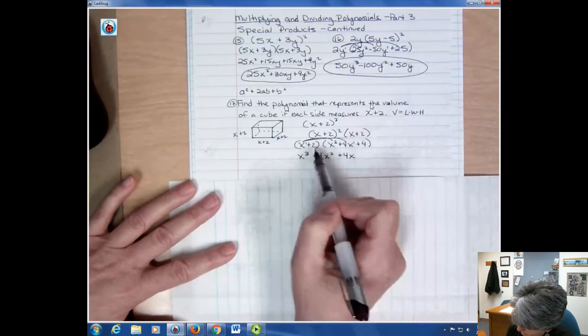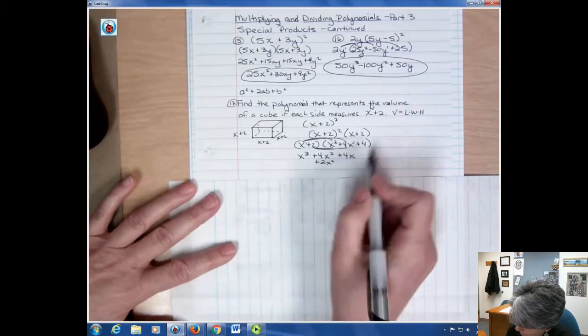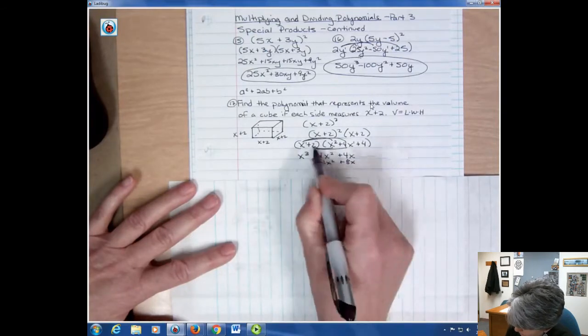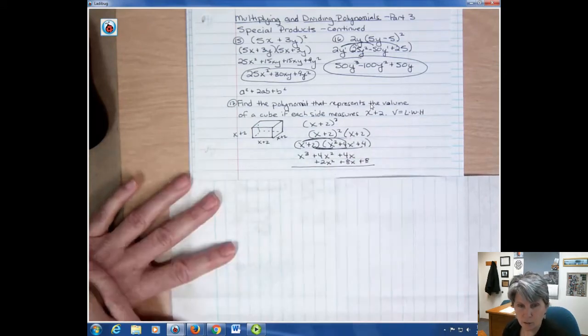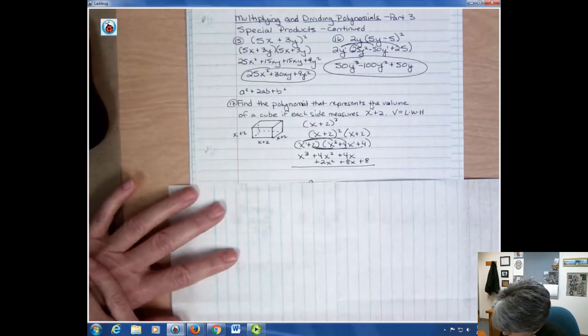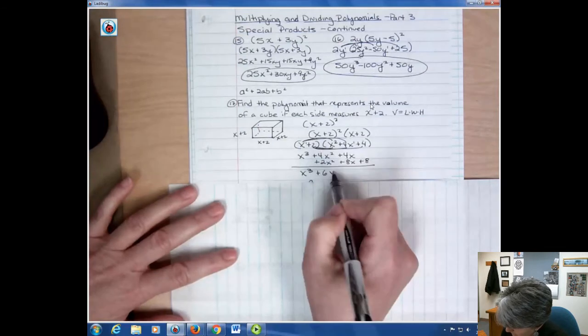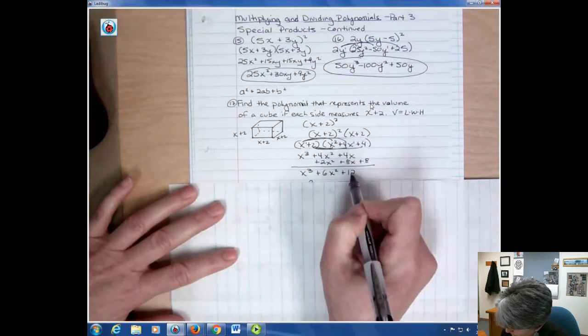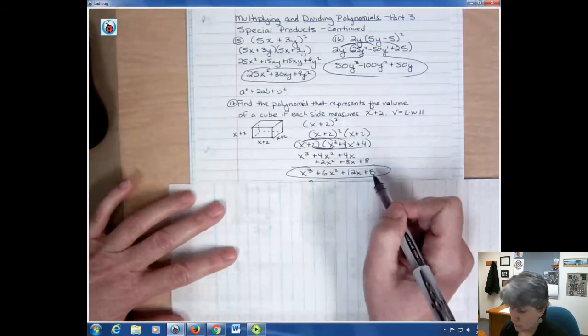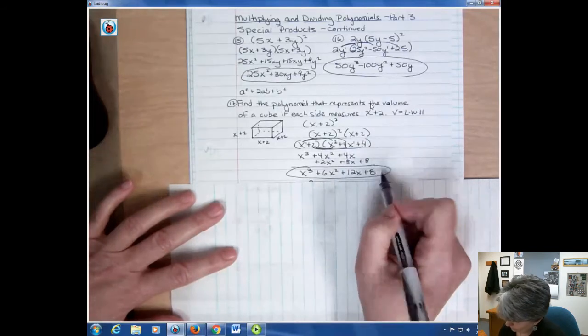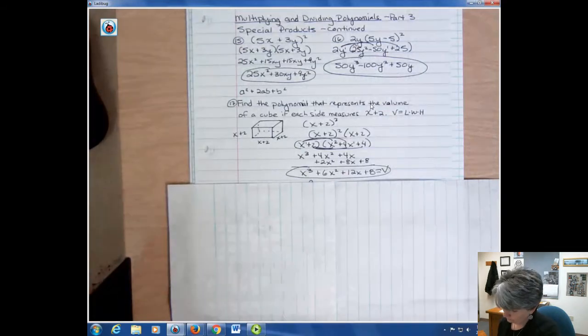Now I'm going to go back and say 2 times x squared, 2 times 4x, and 2 times 4. So I'm ready to combine those like terms like I did before. And that gives me x to the third plus 6x to the second plus 12x plus 8. So that would be the, this represents the volume. I can call that volume if I want. Then that's the polynomial though that would represent the volume of that cube.